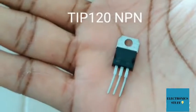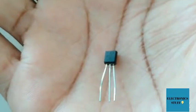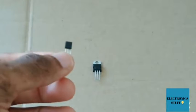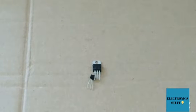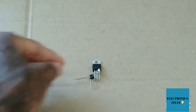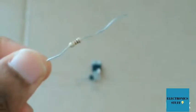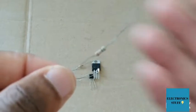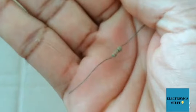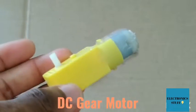For this project you need a TIP 120 NPN transistor, a BC547 NPN transistor, an LED, a 100 ohm resistor, a 220 ohm resistor, a 100k ohm potentiometer, and of course the DC gear motor.